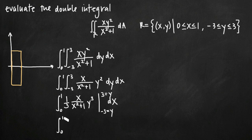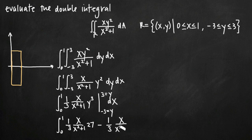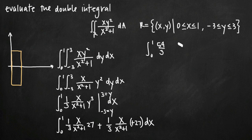Plugging in the upper limit 3: (1/3) · x/(x²+1) · 27, since 3³ = 27. Then we subtract the result at negative 3: minus (1/3) · x/(x²+1) · (−27). The negative signs cancel, giving us 27/3 · x/(x²+1) plus 27/3 · x/(x²+1), which equals 54/3 · x/(x²+1). All y variables have been eliminated; only x remains.